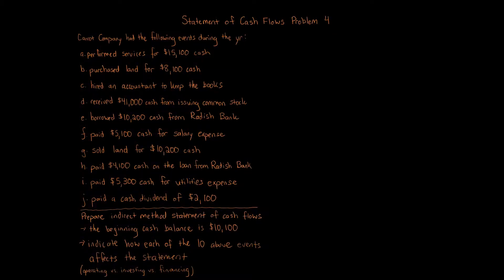Statement of cash flows problem 4. Carrot Company had the following events during the year: performed services for $15,100 cash; purchased land for $8,100 cash; hired an accountant to keep the books; received $41,000 cash from issuing common stock; borrowed $10,200 cash from Radish Bank; paid $5,100 cash for salaries expense; sold land for $10,200 cash; paid $4,100 cash on the loan from Radish Bank; paid $5,300 cash for utilities expense; paid a cash dividend of $2,100. The beginning cash balance is $10,100.